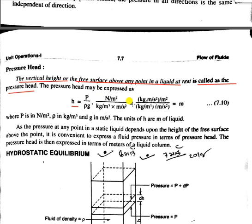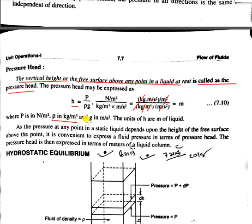Pressure P is in Newton per meter square, density rho is in kg per meter cube, and gravity g is in meter per second square. Reducing the units: Newton per meter square becomes kg·m/s² per m², and dividing by kg/m³ and m/s², the meters cancel and kg cancels, leaving only meters. Therefore the unit of H is meters.